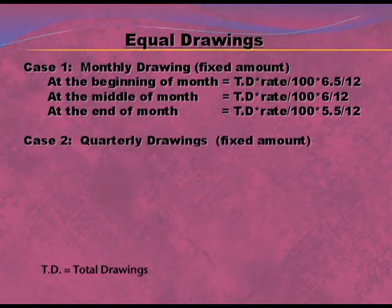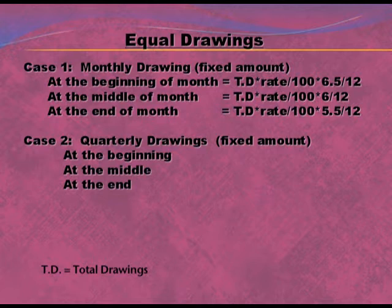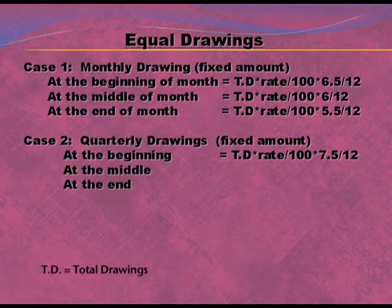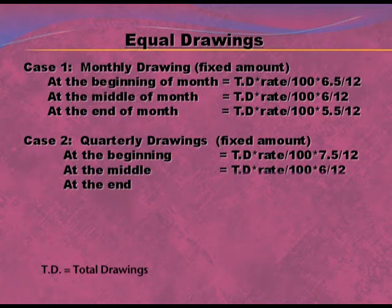Now the second case of equal drawing is quarterly drawings. If one quarter's drawing is one thousand, then for the whole year it will be multiplied by four, giving four thousand. There are again three formulas. At the beginning of the quarter, the formula is: Total Drawing × Rate/100 × 7.5/12, where 7.5/12 is the average period.